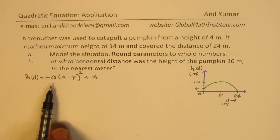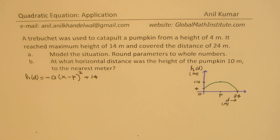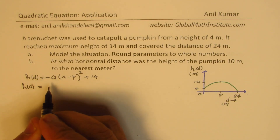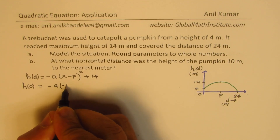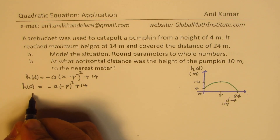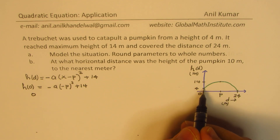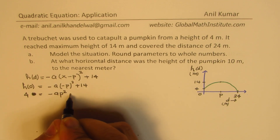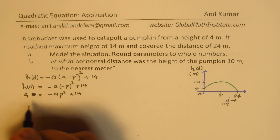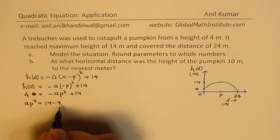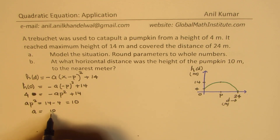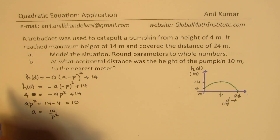We need to find the parameters A and P to get our quadratic equation. Using the two points given to us: when the distance is 0, we can write 4 equals minus A times (0 minus P) squared plus 14. So we get A times P squared equals 14 minus 4, which is 10. Therefore A equals 10 over P squared. Let's call this equation number 1.